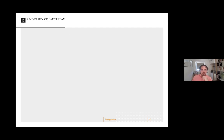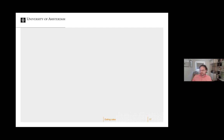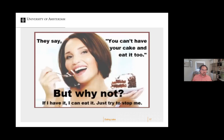We have this tension: on the one hand we have predictive models that are great at explaining but apparently not tractable; on the other hand we have tractable models with clear causal relations but poor at predicting. The saying is you can't have your cake and eat it — but why not? If I have it I can eat it, just try to stop me.